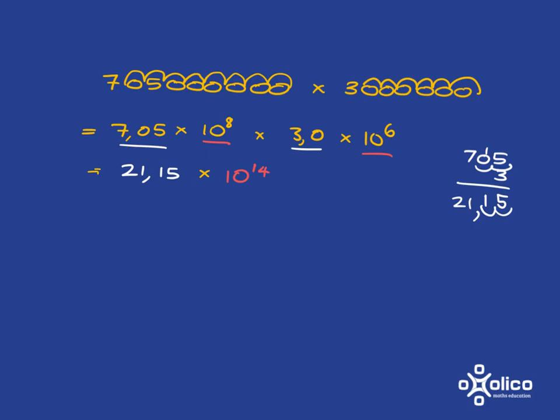Now it'll be nice, instead of just having it like this, that we actually have it in proper scientific notation. This isn't scientific notation here because it's 21.15, and remember in scientific notation we only want to have one digit before the comma. So how do we get that into scientific notation? Well, we know that 21.15 is the same as 2.115 multiplied by 10.